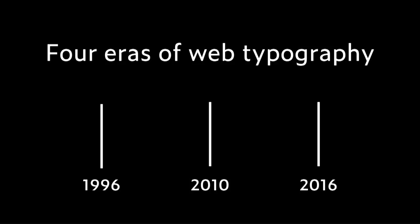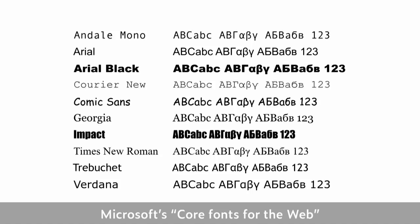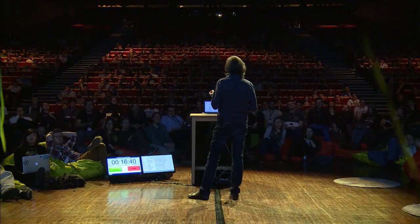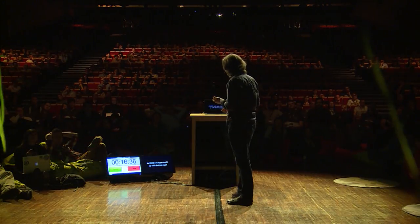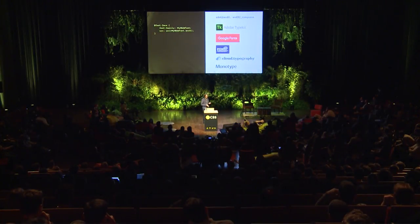I want to first mention four eras of web typography. Before 1996, let's call that prehistory. From 1996 to 2010, we had Microsoft's core fonts for the web — a great initiative that gave us 10 type families, which you could pretty much rely on being on all computers. Five of those for text.